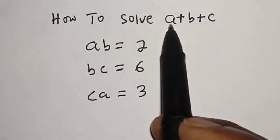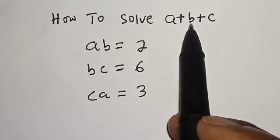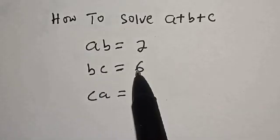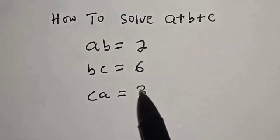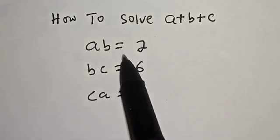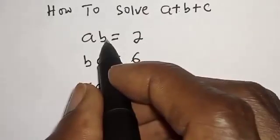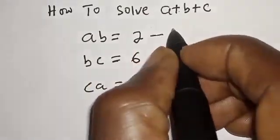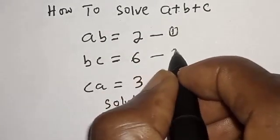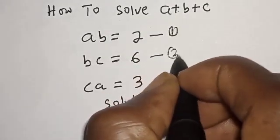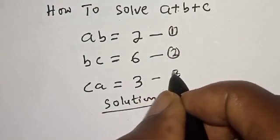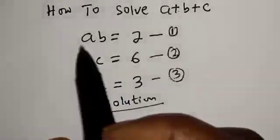How to solve a plus b plus c if ab is equal to 2, bc is equal to 6, and ca is equal to 3. We want to find the value of a plus b plus c. From the given equations: ab equals 2 — call this equation 1; bc equals 6 — equation 2; and ca equals 3 — equation 3.